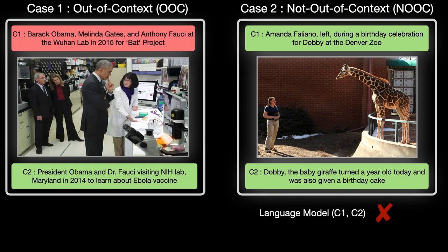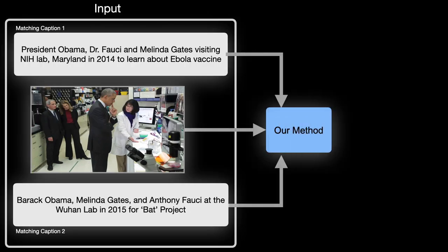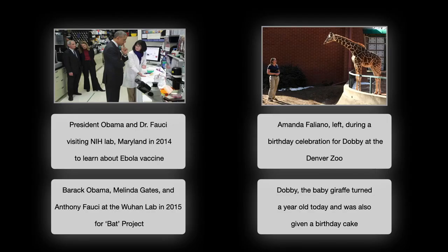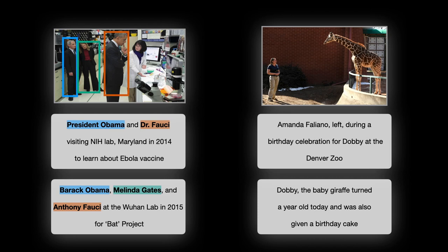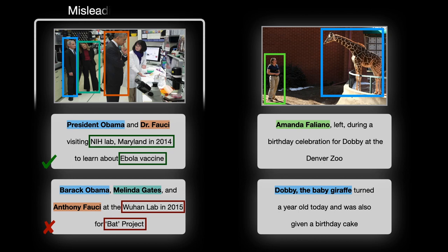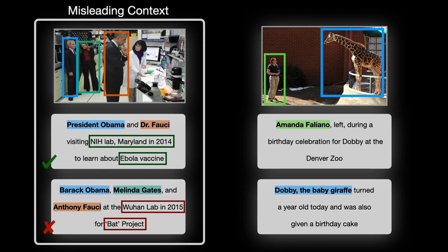In this work, we propose an automated technique to detect both of these cases correctly. Our method takes as input an image and two captions and predicts whether the image was used out of context. We first detect which object regions a caption refers to. If both captions refer to the same objects but are semantically different, we have strong signal of out-of-context use.